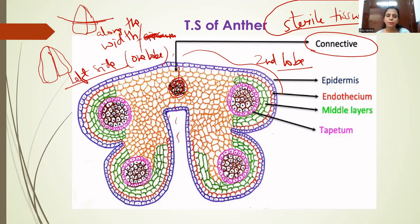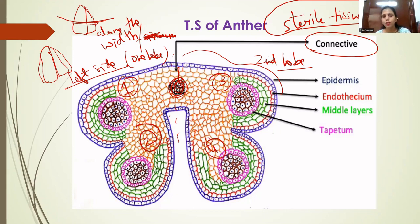As discussed, the dithecal anther has four microsporangia or pollen sacs. You can see the first, second, third, and fourth microsporangia in the diagram. Each microsporangium is covered by an outermost layer made up of a single cell — a very thin single-cell layer called the epidermis.